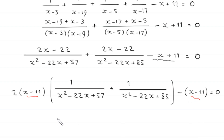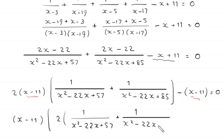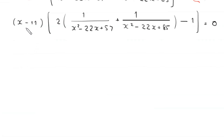Factoring out (x minus 11) gives: (x minus 11) times [2 times (1 divided by (x squared minus 22x plus 57) plus 1 divided by (x squared minus 22x plus 85)) minus 1] is equal to 0. From here, either x minus 11 is equal to 0, or the bracketed expression is equal to 0.